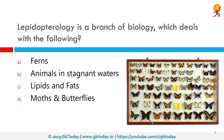Lepidopterology is a branch of biology that deals with which of the following? It deals with moths and butterflies. Lepidopterology is a branch of entomology concerning the scientific study of moths and the three superfamilies of butterflies. Someone who studies in this field is called a Lepidopterist, or archaically an Aurelian.